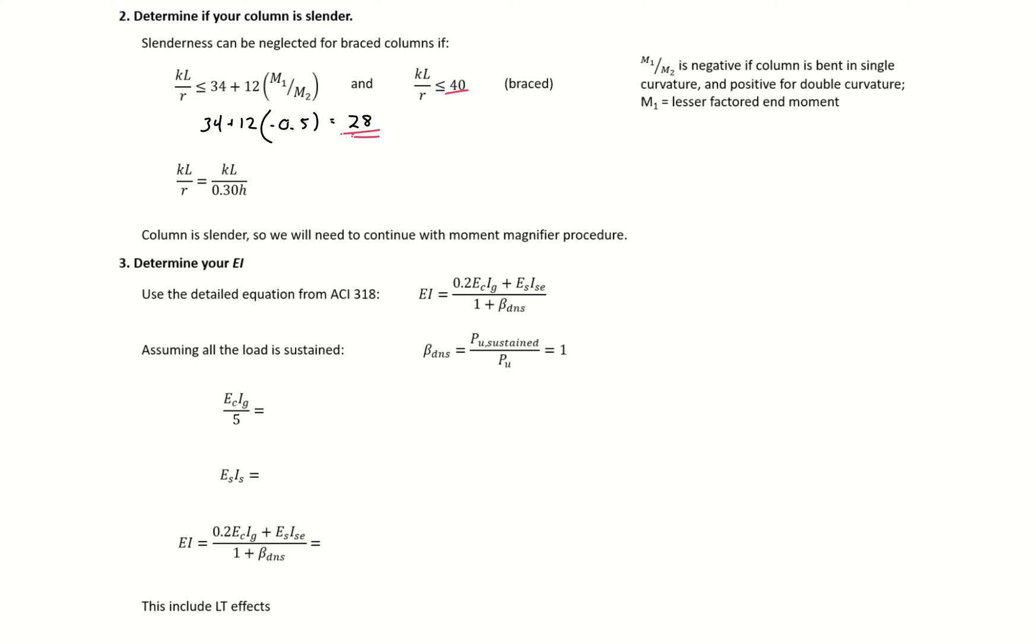Now we need to check our KL over R ratio for our actual column to see if we're less than this limit. If we're less than the limit, we can neglect slenderness. If we're above the limit, we need to take into account slenderness.